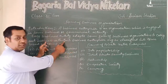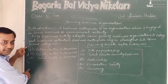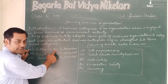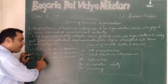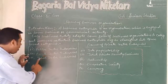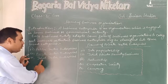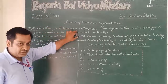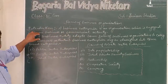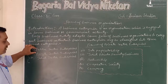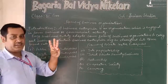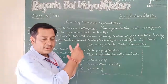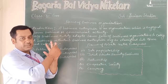We have divided business organizations into three major categories. The first category is public sector enterprises. The second is private sector enterprises. And the third is joint sector enterprises.